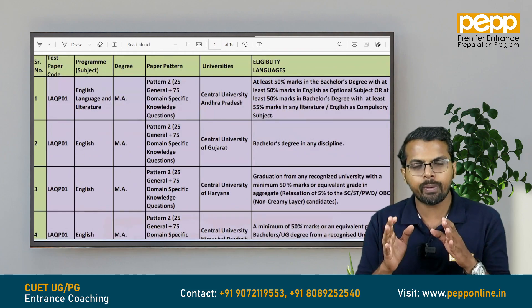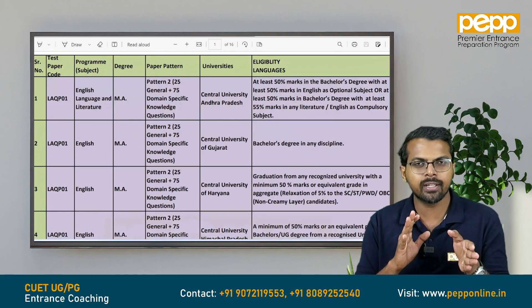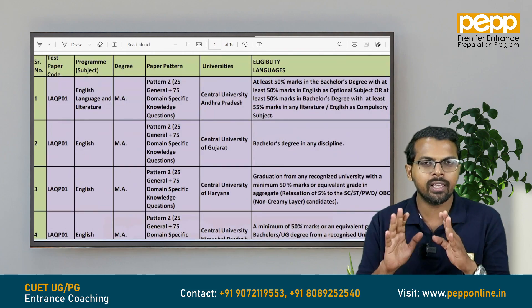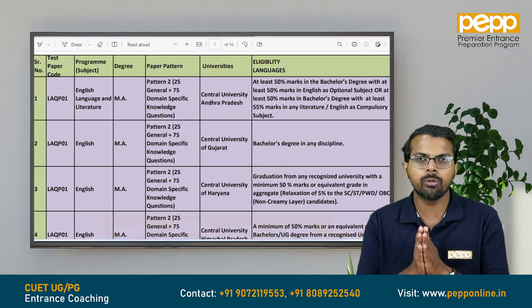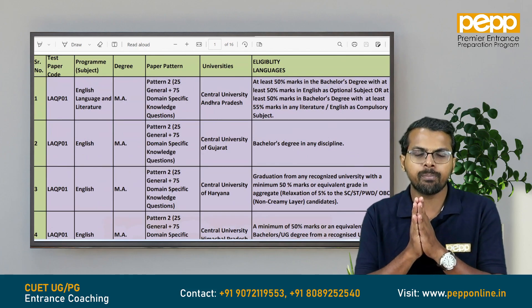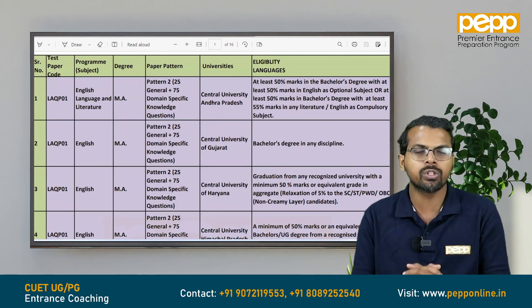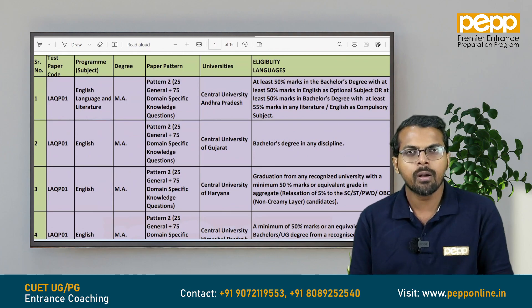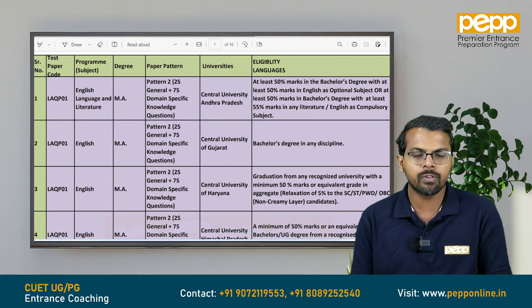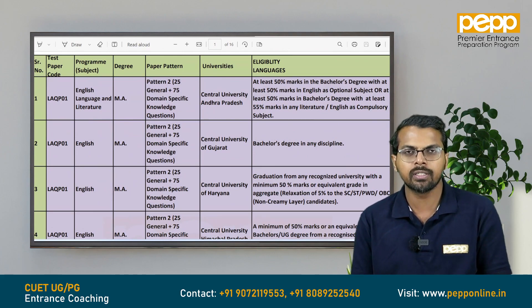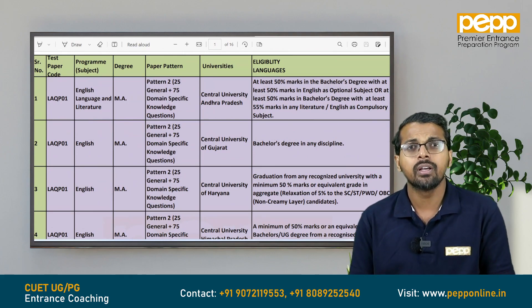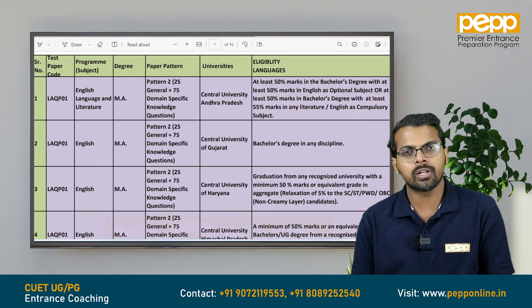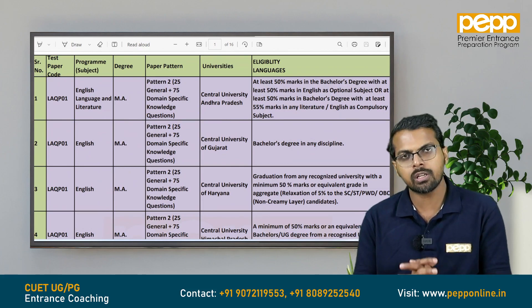The exam pattern is: Part A is 25 marks, Part B is 75 marks. There is a general paper of 75 marks for the subject domain.